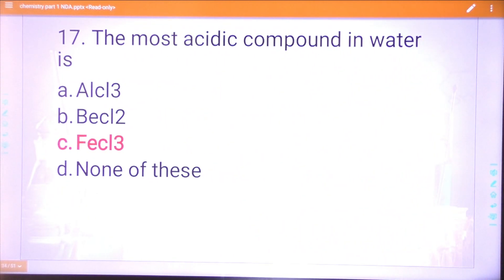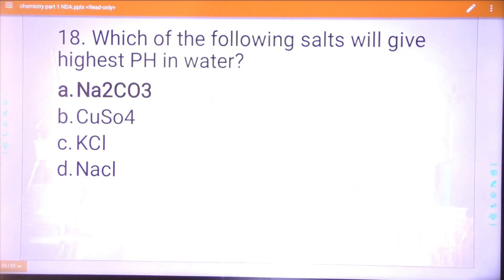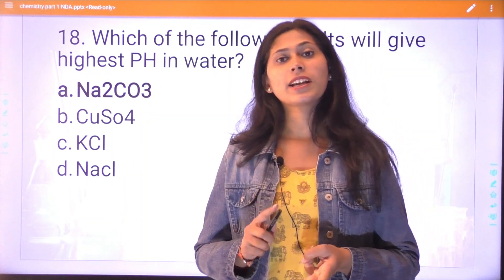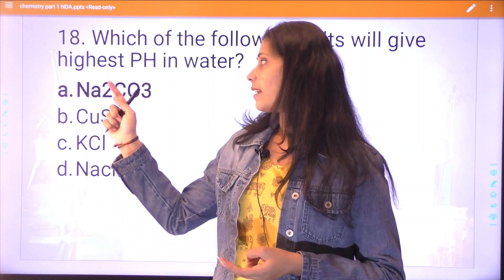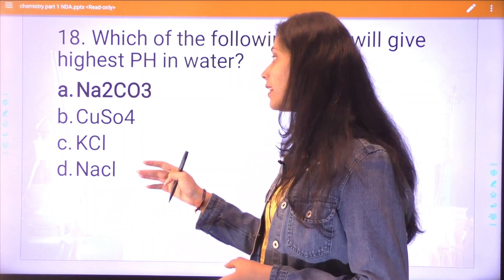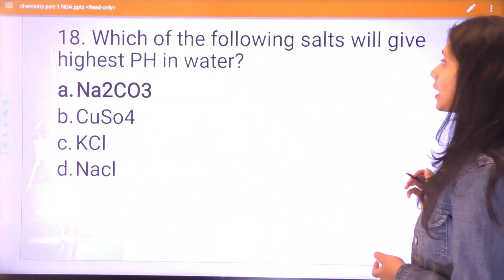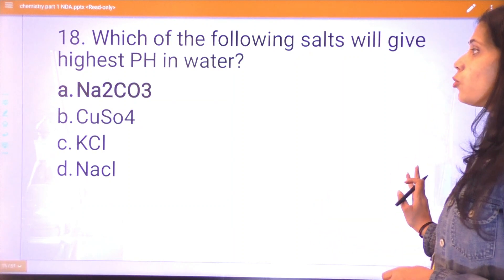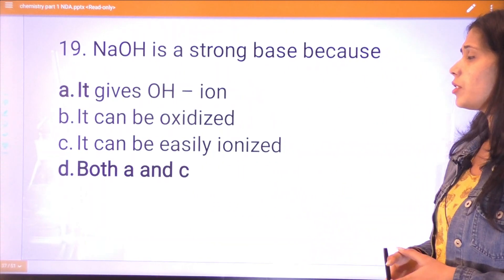Question seventeen: the most acidic compound in water is FeCl3. Question eighteen: which of the following salts will give highest pH in water? There are a lot of questions from pH. From the first we have seen ionization, the second concept was Lewis acid and Lewis base, and the third concept is pH. The correct answer is Na2CO3.